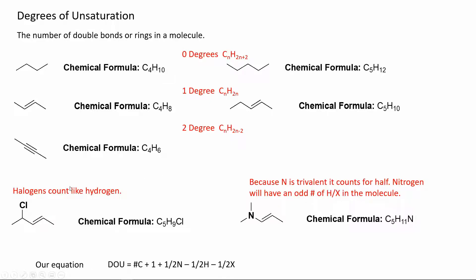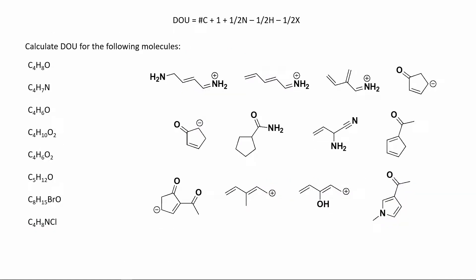From this, we can derive the equation: the total degrees of unsaturation equals the number of carbons plus one, plus one-half the number of nitrogens, minus one-half the number of hydrogens, minus one-half the number of halogens. From the molecular formula alone, we can calculate how many double bonds or rings exist in a molecule. For example, for the molecule shown, the answer should be three: two pi bonds and one ring. Practicing all these examples will play an important role in building your foundation of organic chemistry for reactions in the future.